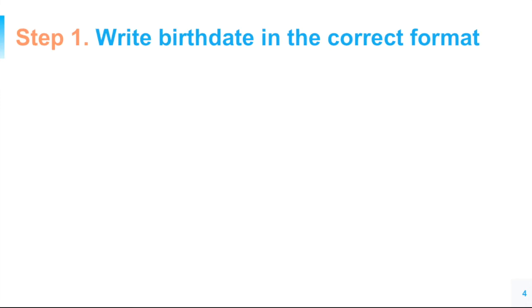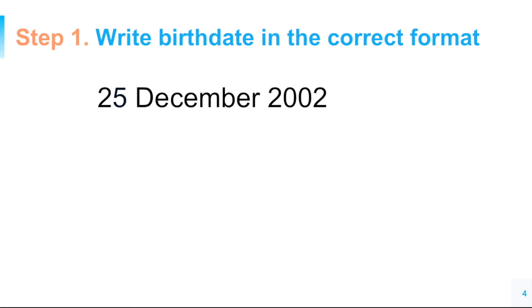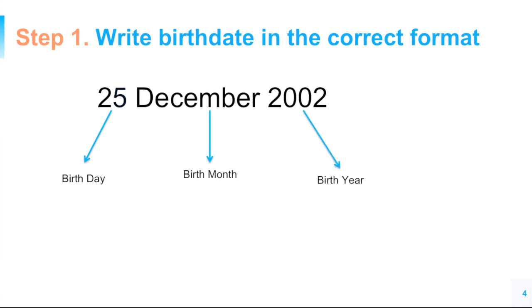I'm not going to present any proof of the procedure, so this is just going to be simple mathematics. Now step one: write the birth date in the correct format. I'm going to use the example of my daughter's birthday, which is actually on Christmas Day, 25th of December, 2002. Make sure your birthday is written in this correct format. We'll call 25 the birthday, December the birth month, and 2002 the birth year.